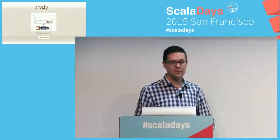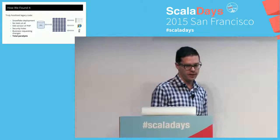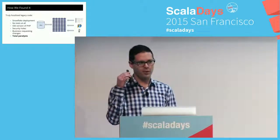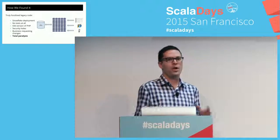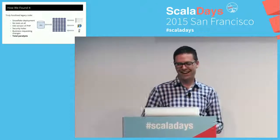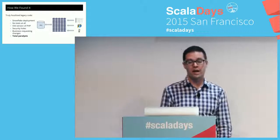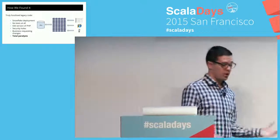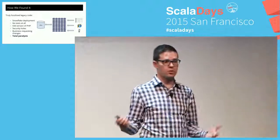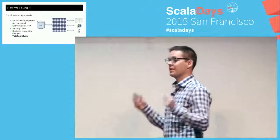This is what it looked like before we got to it — truly fossilized legacy code. Snowflake deployment: we literally had to call the guy who knew how to deploy it to the cluster. No test coverage at all. It was an old version of PHP with security holes we couldn't address. The business was requesting changes — we were getting huge traffic to these image landing pages that could be monetized. The business asked if we could monetize some of that traffic, and we said no — it was too scary. It was total paralysis.